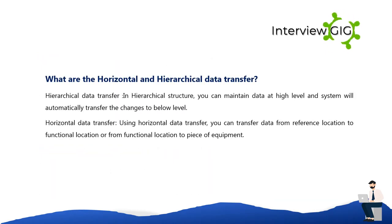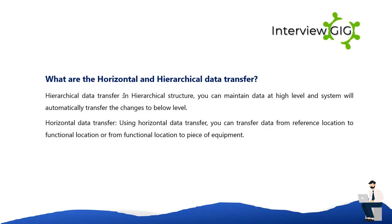In hierarchical data transfer, you can maintain data at a high level and the system will automatically transfer the changes to the levels below. In horizontal data transfer, you can transfer data from a reference location to a functional location, or from a functional location to a piece of equipment.